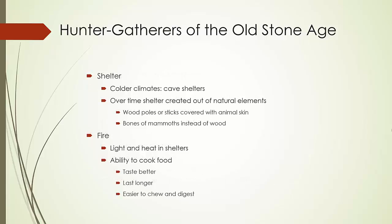Let's talk about shelter and homes. In colder climates, they had caves for shelter. Over time, their shelters became more evolved — they used wood poles or sticks covered with animal skin, which is depicted in many ancient pictures. Or they would use bones of mammoths instead of wood. They used fire for heat and to cook their food. In the beginning, there was no real cooking — just gathering and eating from nature. However, over time, for adaptation and survival, the idea of cooking came about.